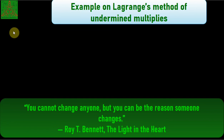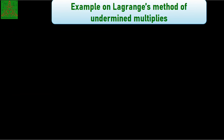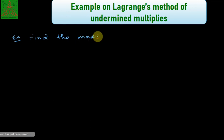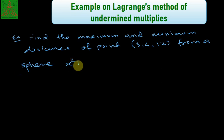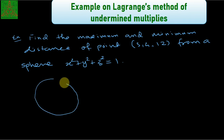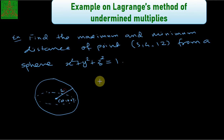Let us state the example. Find the maximum and minimum distance of a point (3, 4, 12) from a sphere x² + y² + z² = 1.